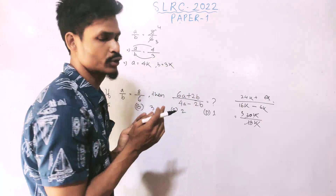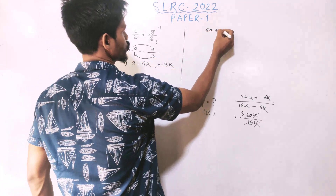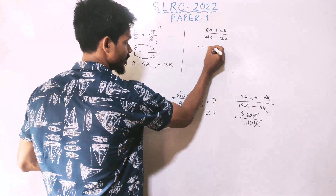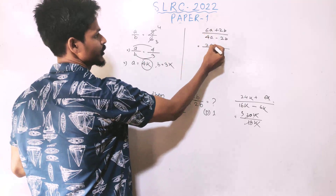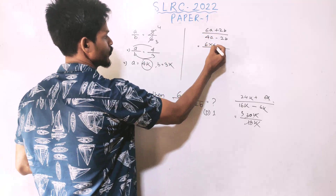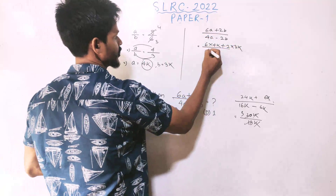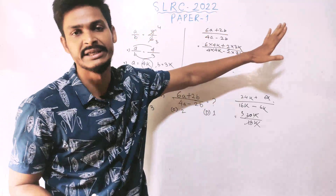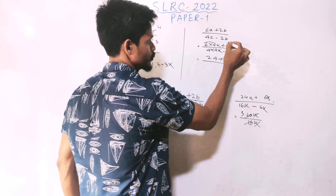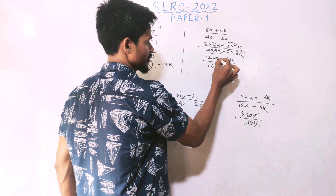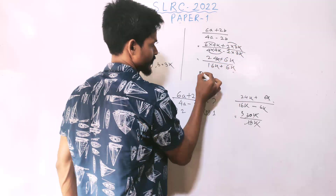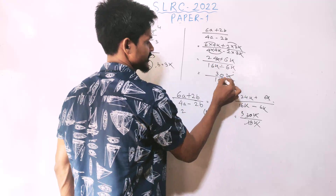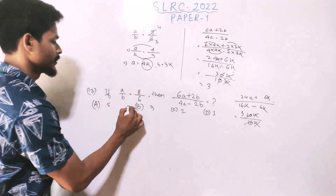Substituting the values: 6 into 4k plus 2 into 3k divided by 4 into 4k minus 2 into 3k. That gives 24k plus 6k over 16k minus 6k, which is 30k over 10k. The k cancels, giving the answer 3, which is option B.